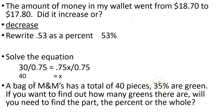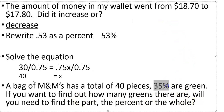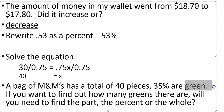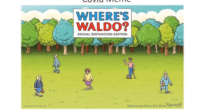A bag of M&Ms has a total of 40 pieces and 35% are green. If you want to find out how many green ones there are, we need to find the part, the percent, or the whole. The percent is 35%, the whole is 40, and we want to know how many are green — so that would be the part.